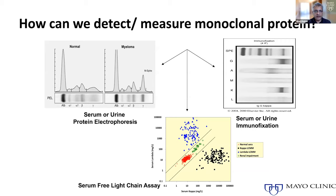For years, the way we have identified monoclonal proteins or immunoglobulins is by using a test called protein electrophoresis, which can be done on the blood serum or on a 24-hour urine collection. On the left you can see a normal-looking electrophoresis, and on the right you can see what's marked as an M spike — the abnormal protein secreted by these abnormal cells. The electrophoresis tells us how much M protein is present, but not what type. For that we use immunofixation, which can identify whether it's an IgG heavy chain or another type.